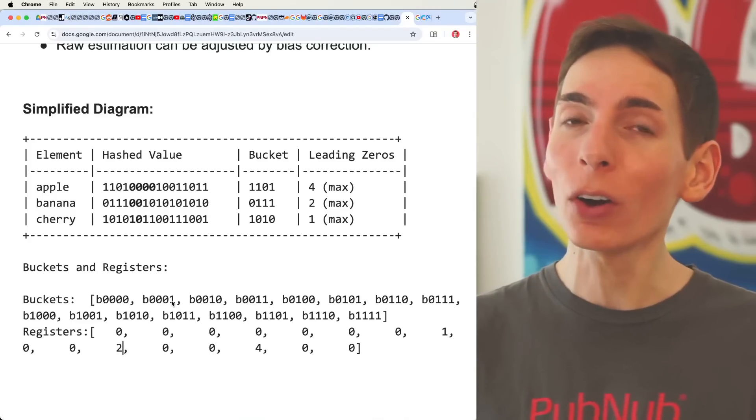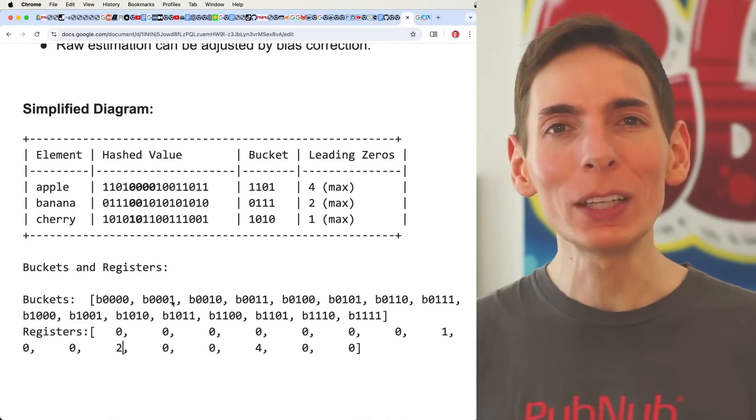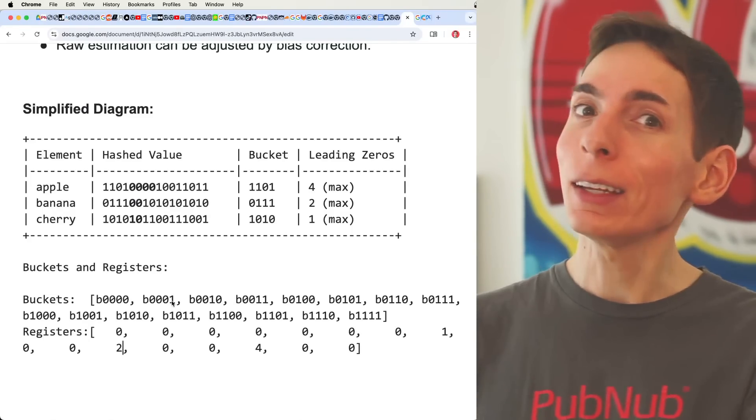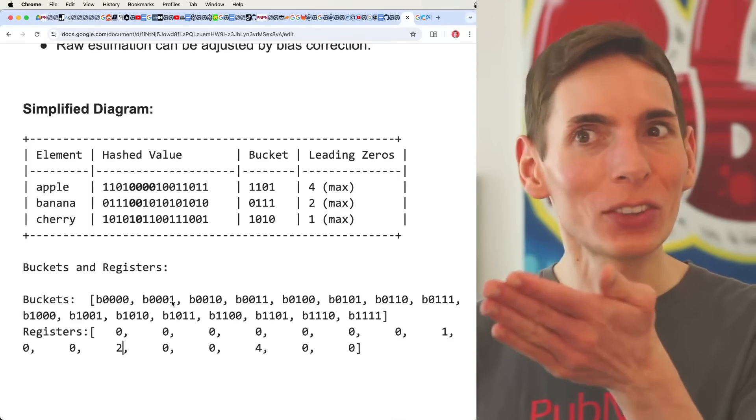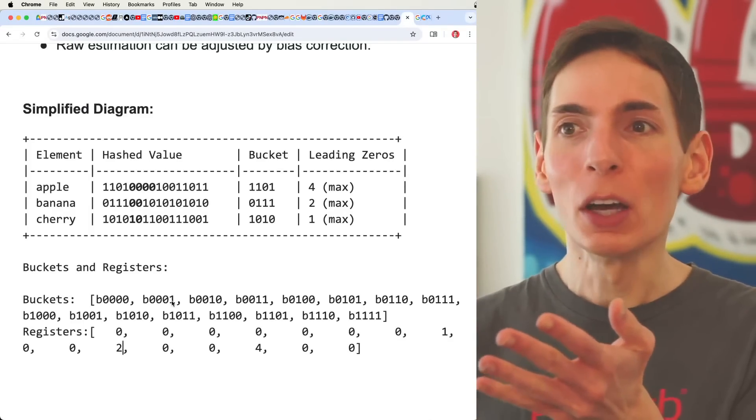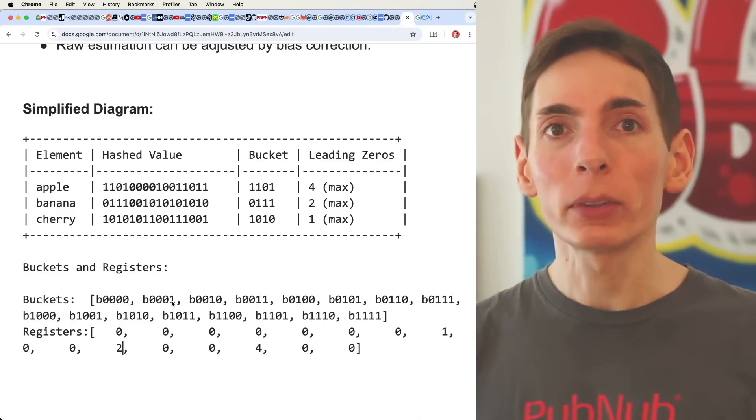Now, HyperLogLog of course is really only good for a large number of elements that we want to count as unique values. You wouldn't want to use this for a small set. The example we're walking through has a small set, and so this will be an unnecessary level of use for HyperLogLog. You want to use it for a large number of unique values.